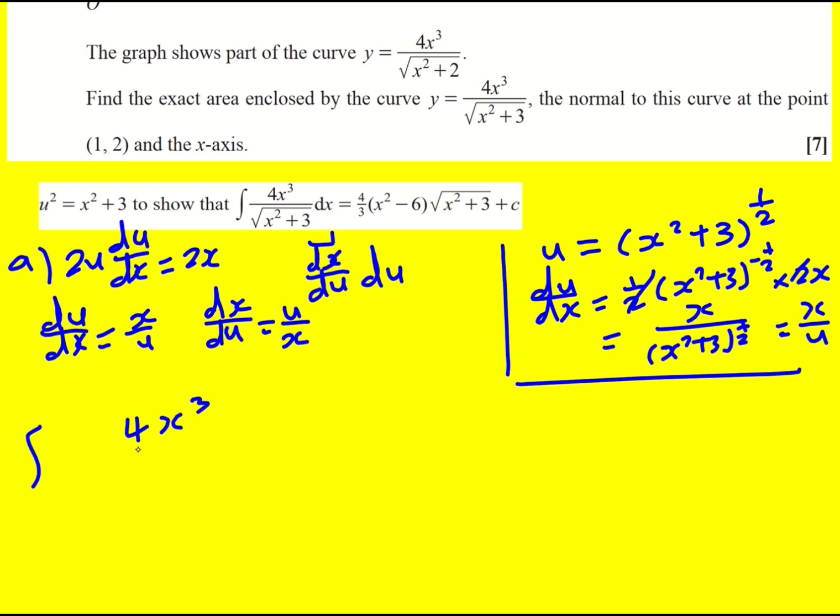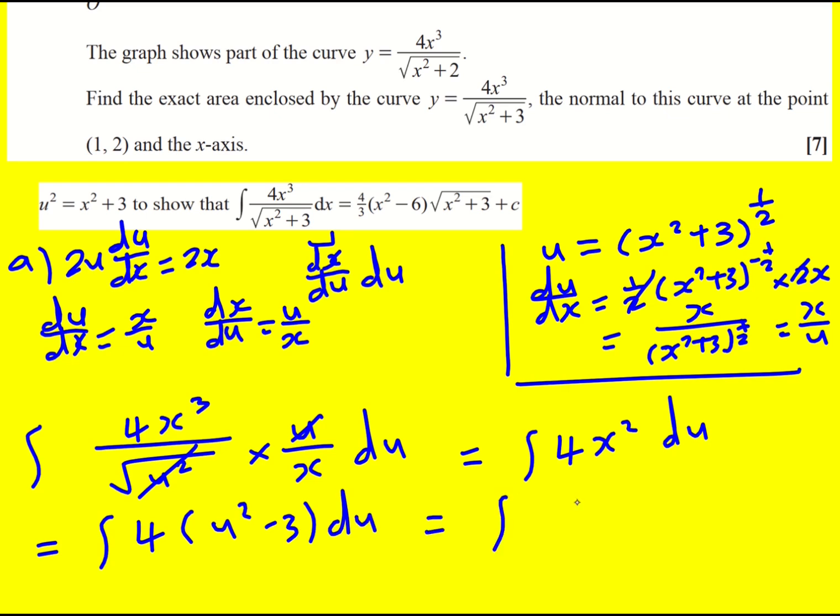So it's going to simplify quite nicely now. So I'm left with this divided by, and it's going to be the square root of u squared. And then dx by du is going to be u over x. And then I'm integrating with respect to u. So then the u's are going to cancel because that becomes u over here. And we're left with the integral of 4x squared. But remember, I'm integrating with respect to u. Right, so now I need to get it back in terms of u. So it's going to be the integral of 4. And then u squared minus 3 du.